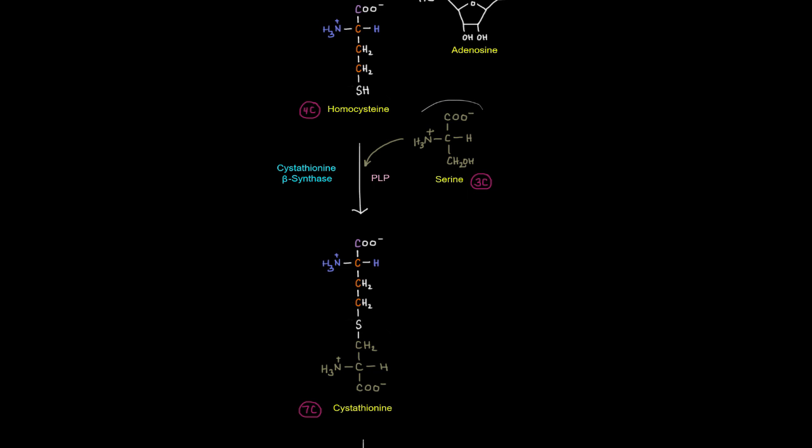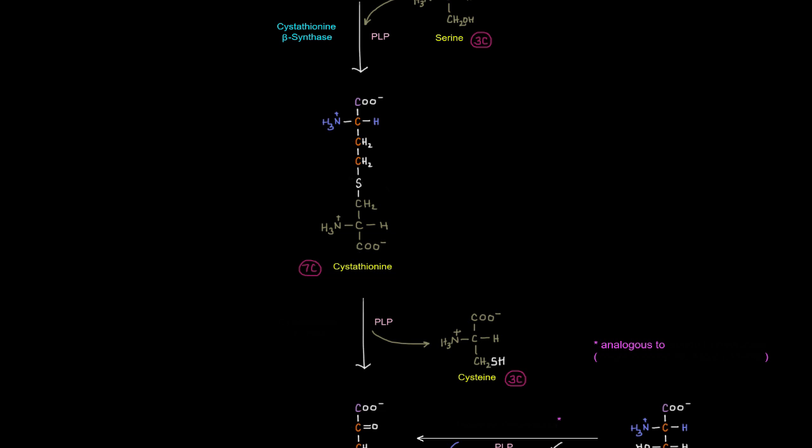So basically what happens is that we're adding the serine portion to this part of homocysteine. So we get it attached right here like this. So this is called cystathionine. Okay. That's seven carbon molecule.